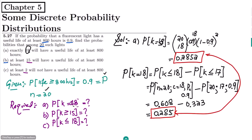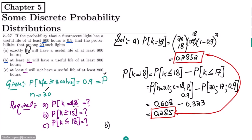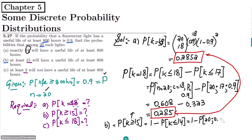Now to solve part b: I want to find the probability that k is greater than or equal to 15. This calculation would be very heavy, so I'm going to use the table. To use the table I need to convert this to a less-than-or-equal-to form, so it becomes 1 minus the probability that k is less than or equal to 14. That means 1 minus the table value where n is 20, probability is 0.9, and c is 14.